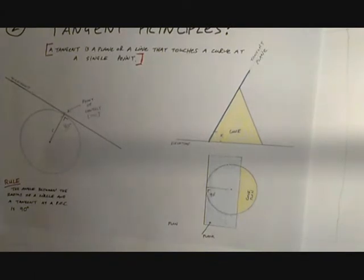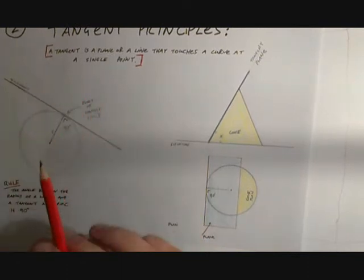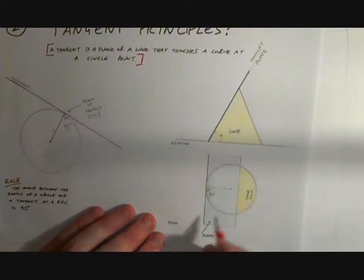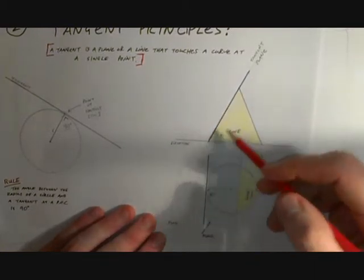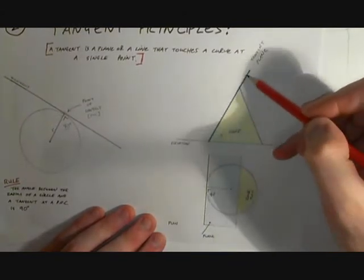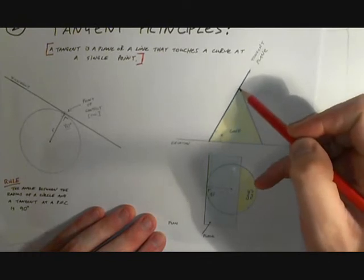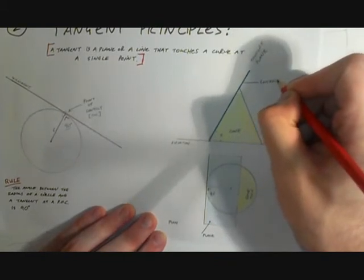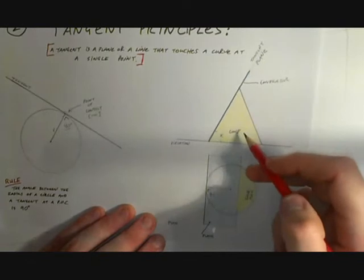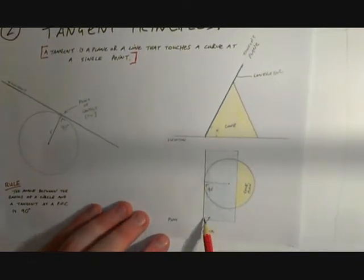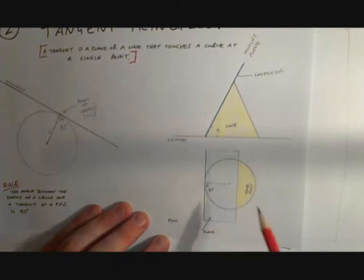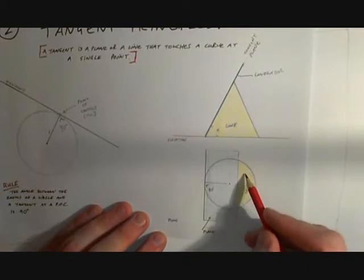If we look at a tangent in the sense of a plane — a tangent plane — we can see it in elevation and plan of a cone. In elevation we see the tangent plane as a line that sits on the edge surface or the generator of the cone. In plan, the surface in blue touches at 90 degrees perpendicular from the radius. In yellow we see the plan of the cone.